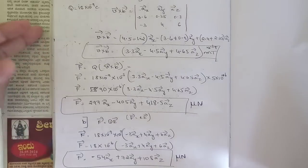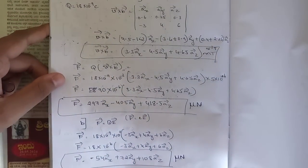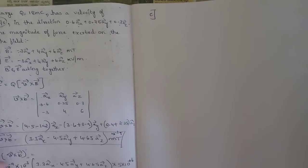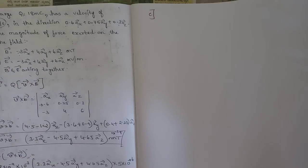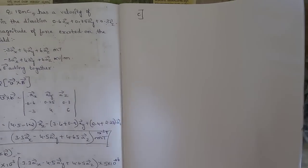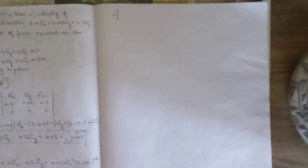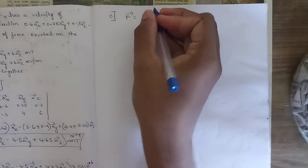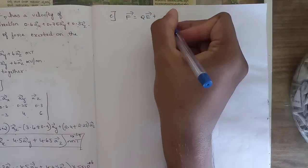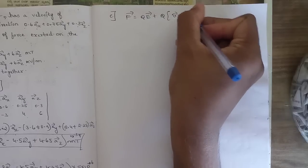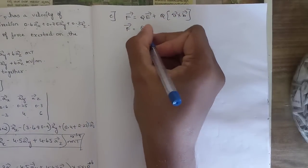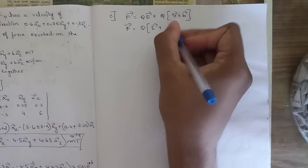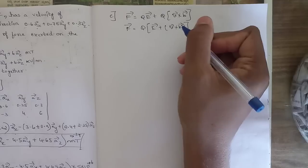For the third sub-question, both B and E are acting together. We apply the total Lorentz force formula: F = q(E + v × B), where both electric and magnetic contributions are included.